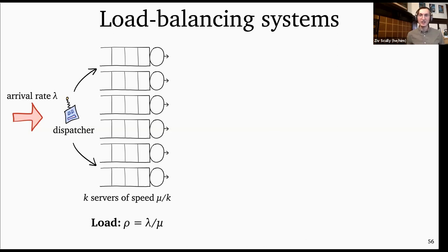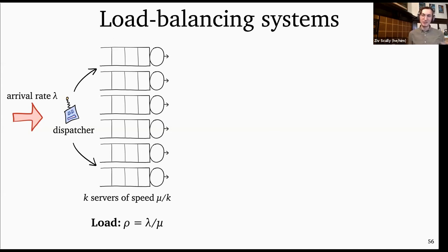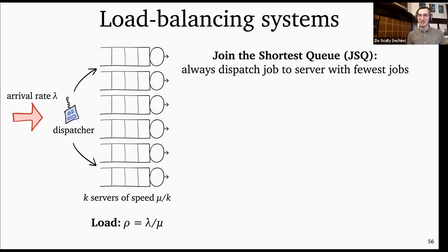Whenever a job arrives, we have to choose which server to dispatch it to. Each server runs in first-come first-serve order, and jobs can't move between servers once dispatched. We're trying to dispatch to minimize mean response time, or equivalently minimize the number of jobs in the system. The first policy we might think to do is spread the jobs out as evenly as possible — and the policy that does this most naturally is called JSQ: Join the Shortest Queue. It always dispatches to the server with the fewest jobs present.